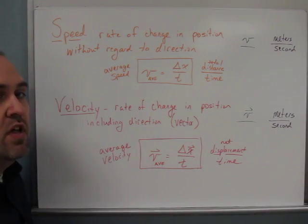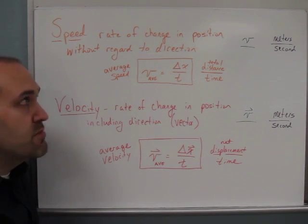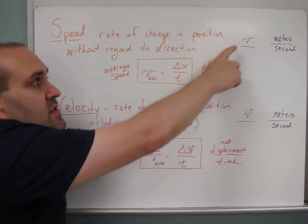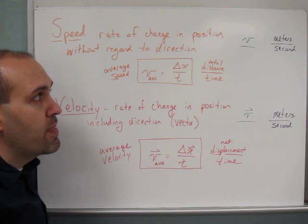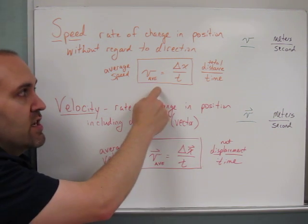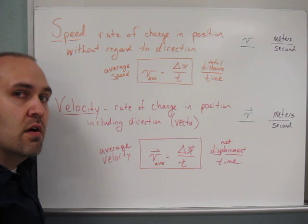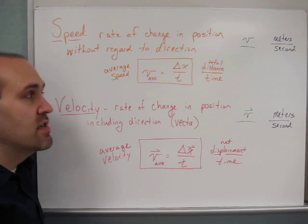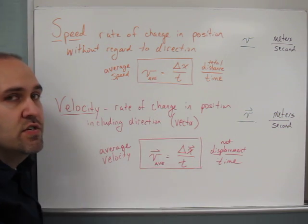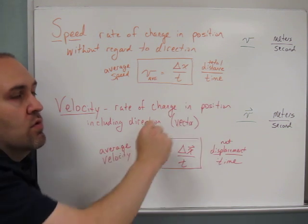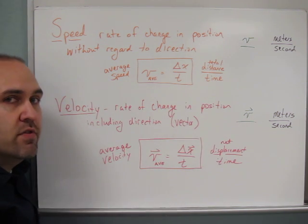Speed is defined as the rate of change in position without regard to direction, and the abbreviation we use for speed is a script or cursive v, and it's measured in meters per second. One equation that you definitely need to write down on your equation card, on your toolbox where you keep your physics tools, is this equation for average speed. So v sub average is delta X over t—that's the total distance divided by the total time that will give you the average speed.